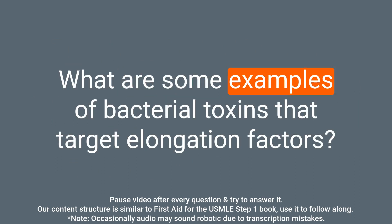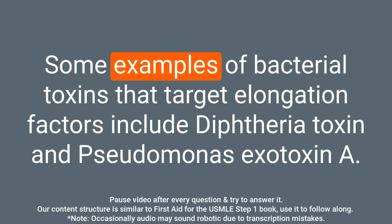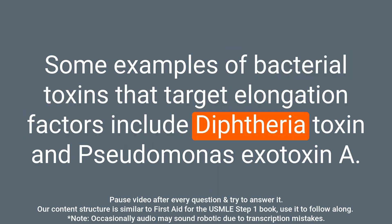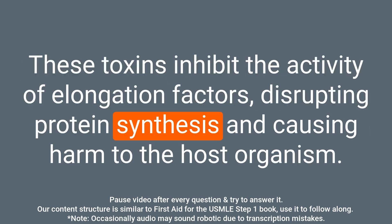Question: What are some examples of bacterial toxins that target elongation factors? Answer: Some examples of bacterial toxins that target elongation factors include diphtheria toxin and Pseudomonas exotoxin. These toxins inhibit the activity of elongation factors, disrupting protein synthesis and causing harm to the host organism.